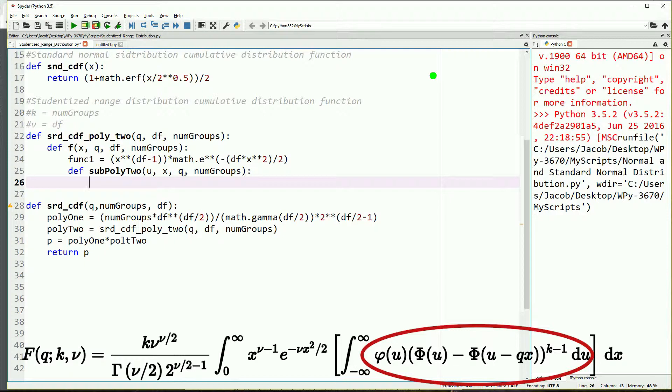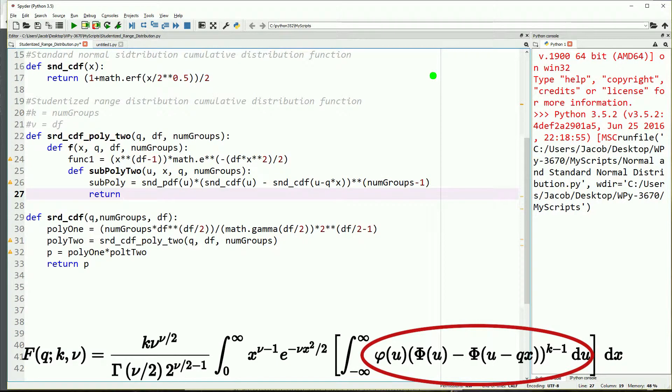Our next step is to start tackling what's in the square brackets. So we'll define another function - a function within a function - and this function will take an argument u, x, q, and our number of groups. So we'll start off by taking our standard normal distribution probability density function of u times the cumulative density function of u minus the cumulative density function of u minus q times x, and then that's taken to the power of number of groups minus 1. And then we will return sub poly.